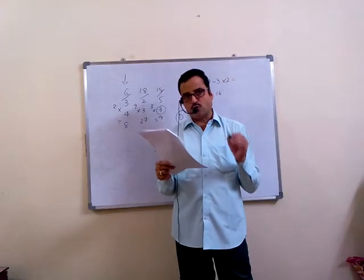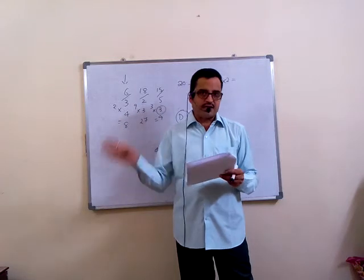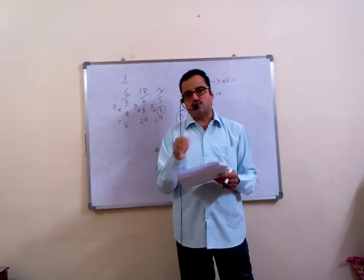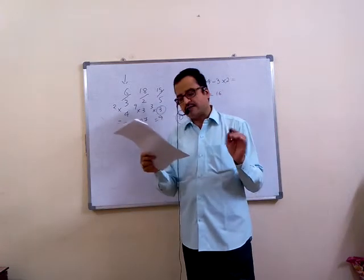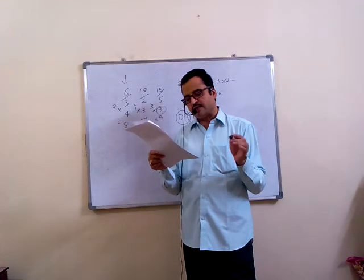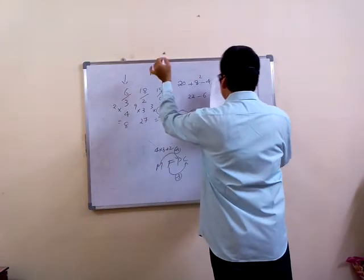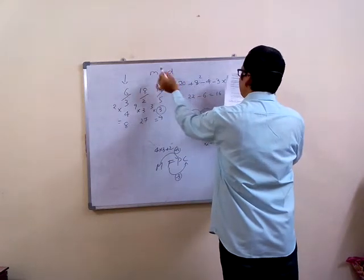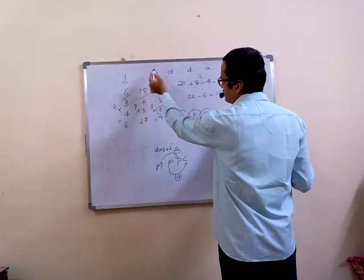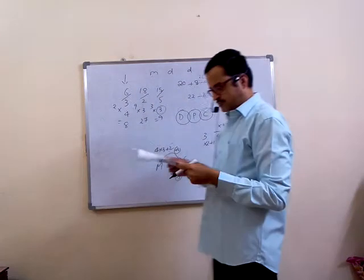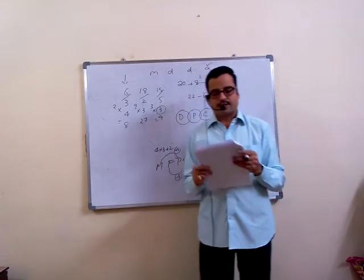Seventeenth, which word will appear fourth in the reverse order of English dictionary? Be careful - reverse order, reverse alphabetical order. First five letters are common: I-N-C-R-E. Sixth letter - first option is M, second option is D, third option is D, fourth option is A. In reverse order, first is M, then D, D, then A. So the answer is A - increaser. Seventeenth, fourth option.